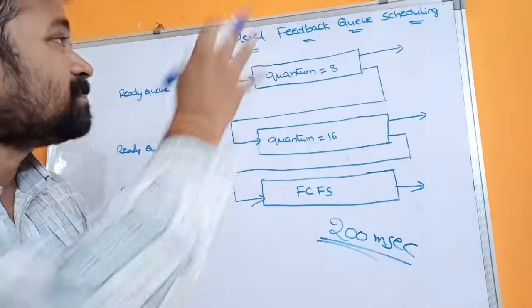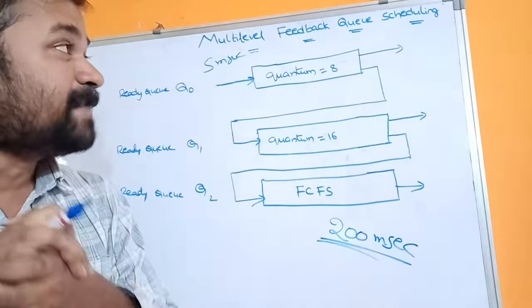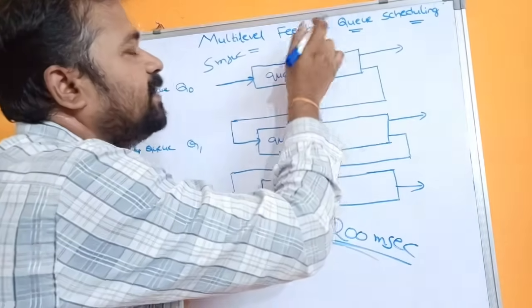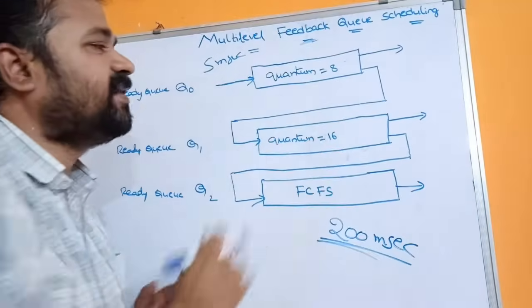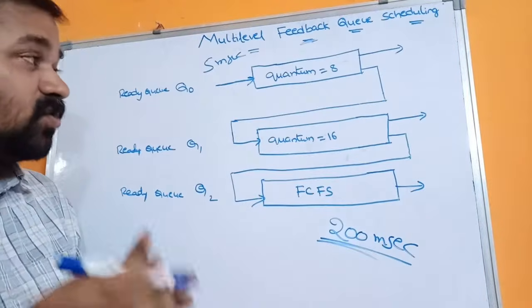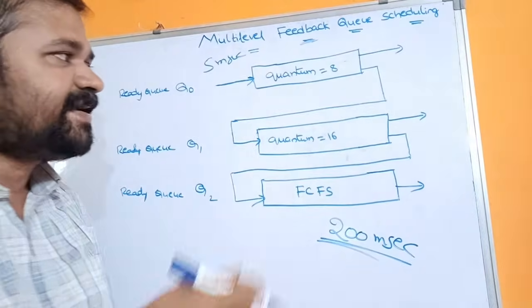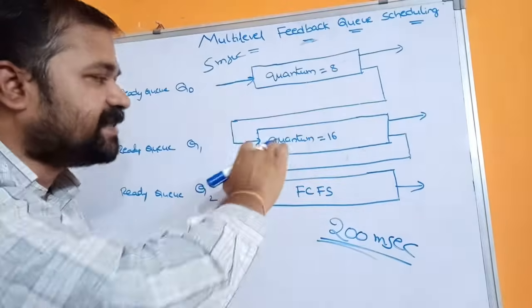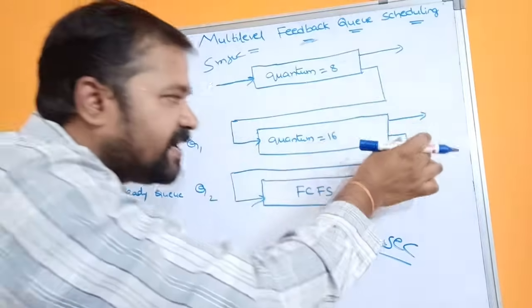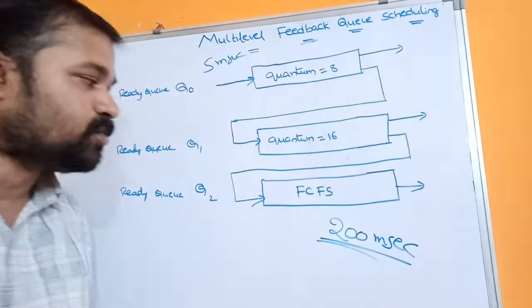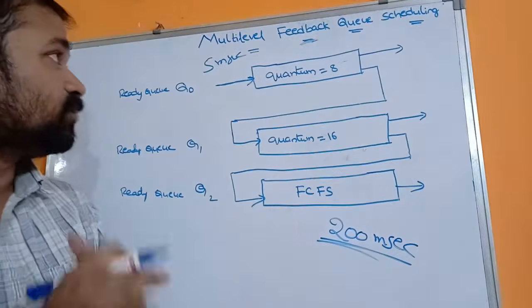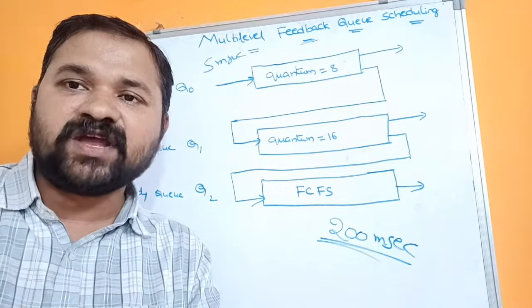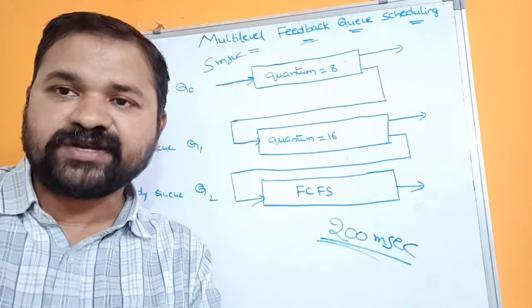So this is about multi-level feedback queue scheduling. The reason we use the term 'feedback' is because here we can move a process from one ready queue to another ready queue. The ability to move processes between ready queues is the key advantage of multi-level feedback queue scheduling.